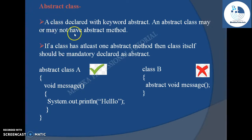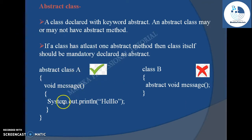Any class which is declared with the abstract keyword is called an abstract class. An abstract class may or may not have any abstract method. That is, if I declare a class with the keyword abstract but do not give any abstract method inside it — for example, class A with no abstract methods but declared as abstract — then this is syntactically correct.